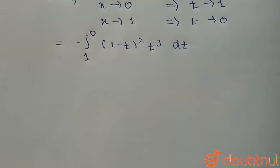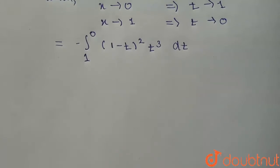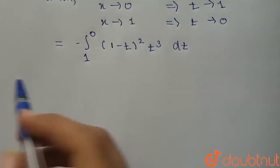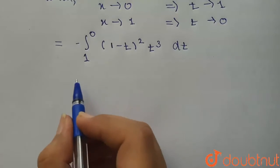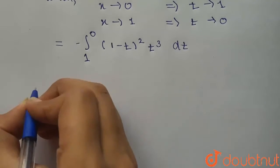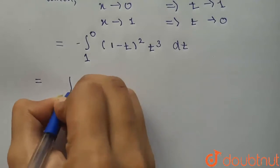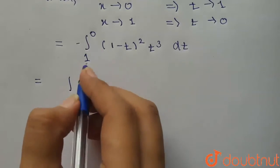Now we apply a property of definite integrals: when we swap the limits from a to b to b to a, we get a negative sign. So if we have limit a to b of f(x), that equals limit b to a of negative f(x).